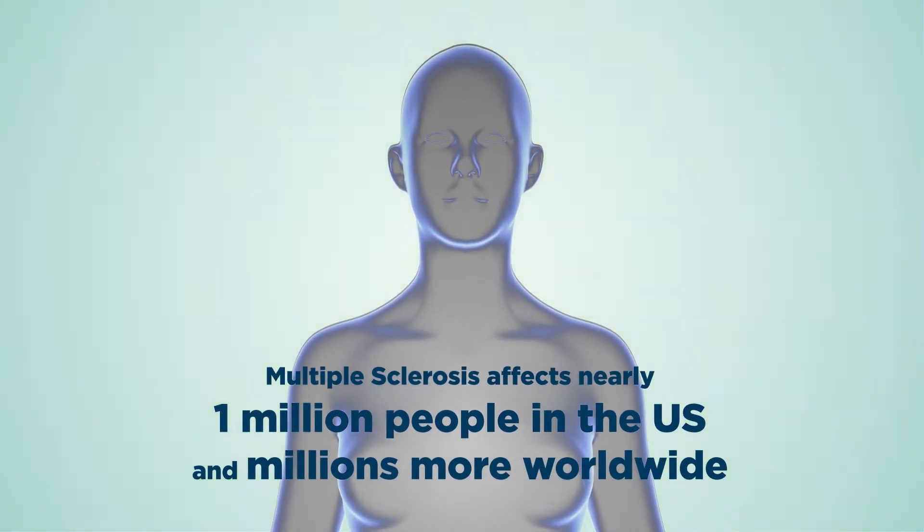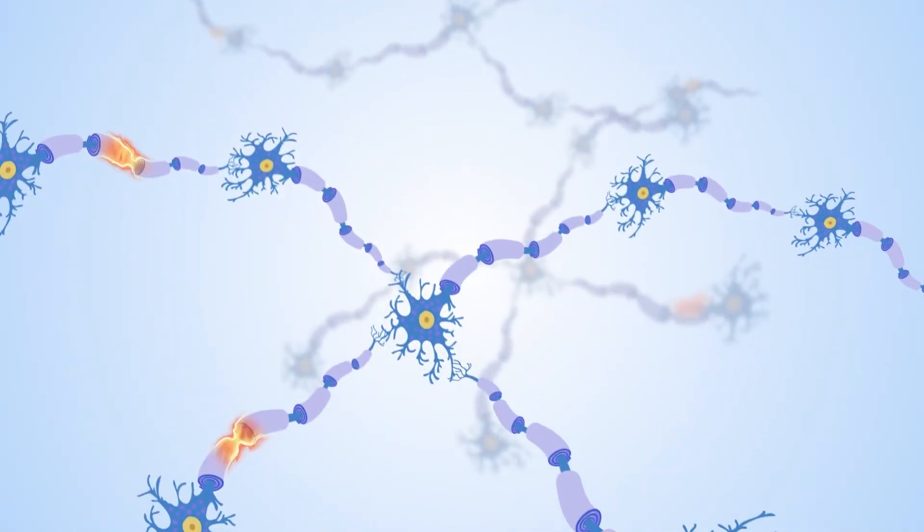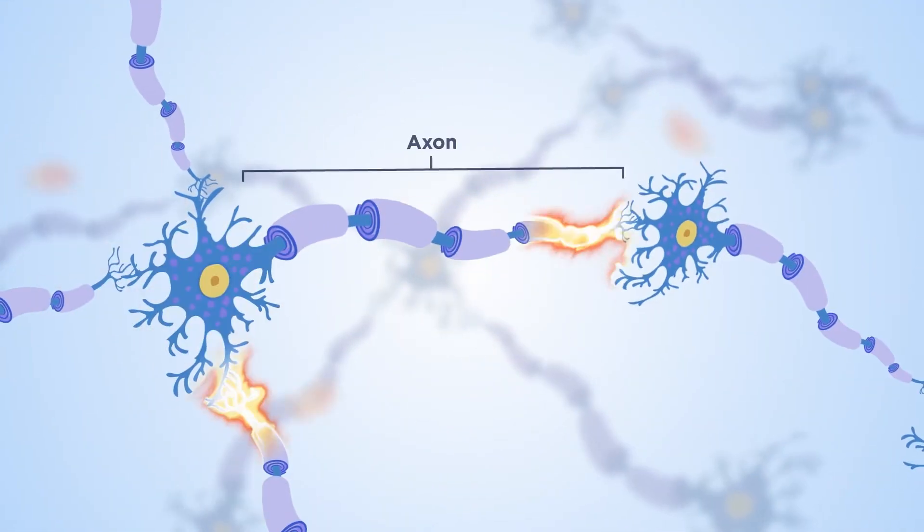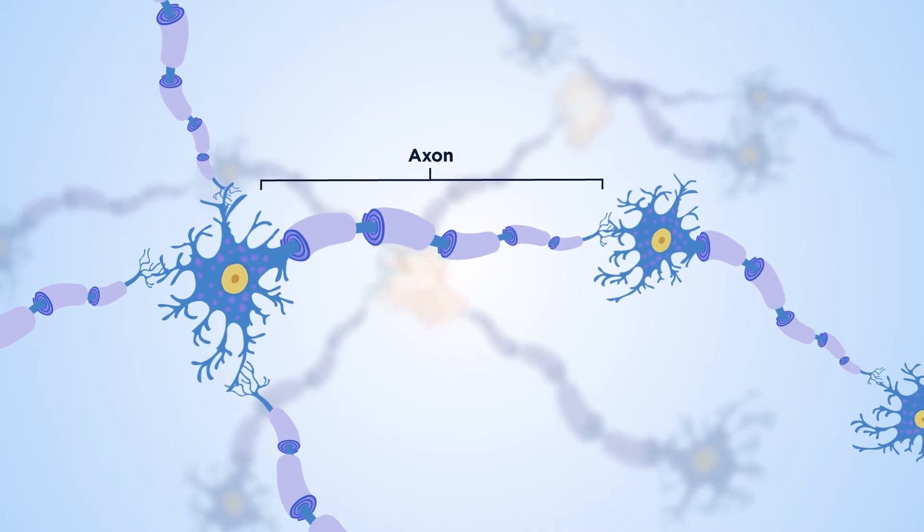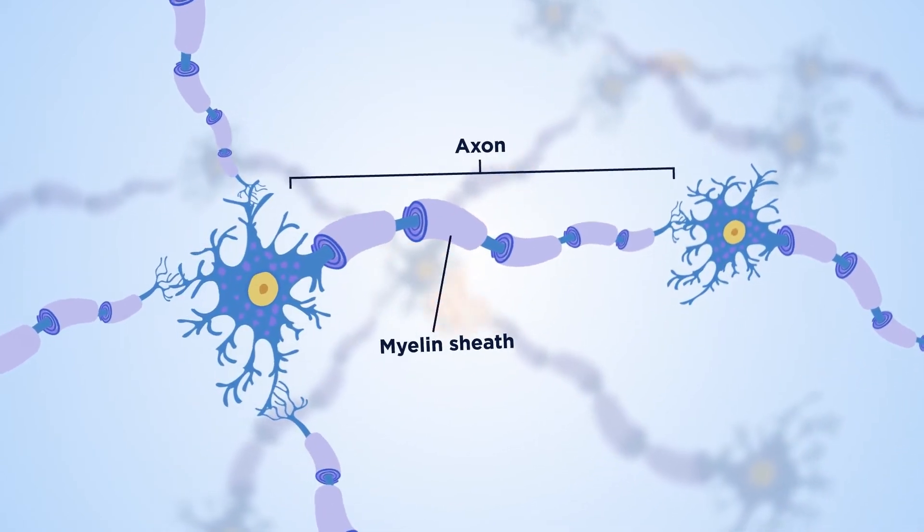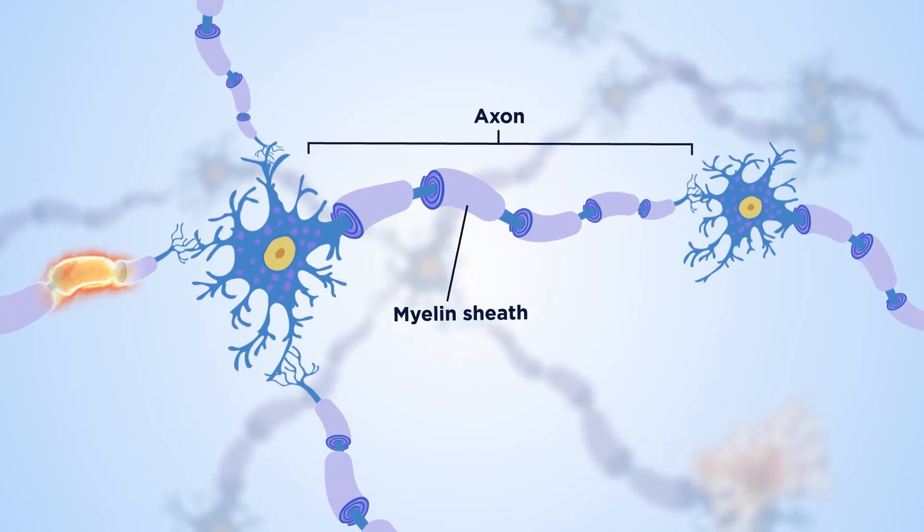and millions more worldwide. In the brain and spinal cord, nerve fibers, or axons, are surrounded by an insulating layer called myelin, which facilitates quick and efficient transmission of electrical signals.